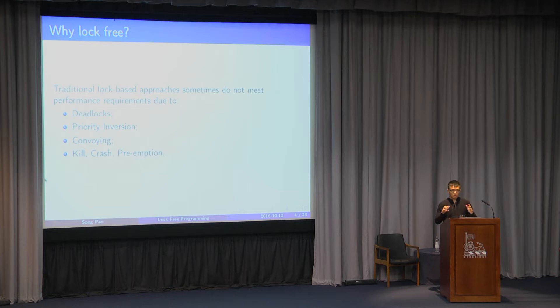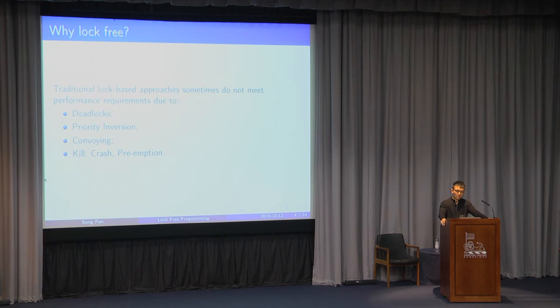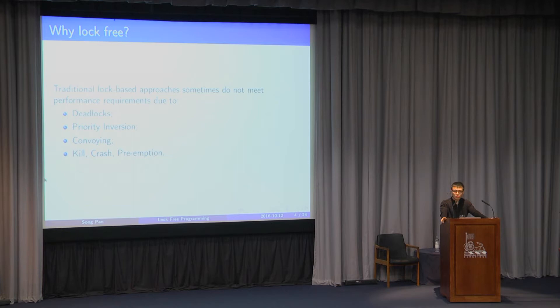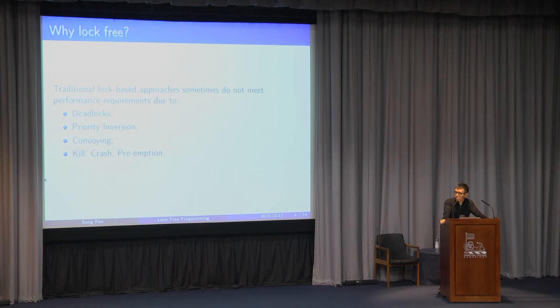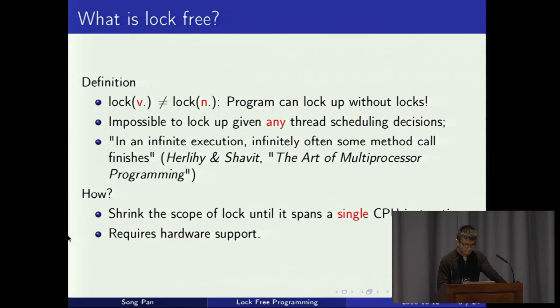Convoying is a case where several threads compete for the same mutex. Since only one thread can get it at a time, all the other threads try to acquire it, fail, give up their time quantum, and force a context switch. Most of the CPU time is thus spent in context switching, which is very inefficient. Lastly, suppose a thread holding a mutex is killed, crashes, or is preempted — any other threads wanting that mutex cannot proceed. There are ways to deal with this using locks, but they're very complicated and error-prone.